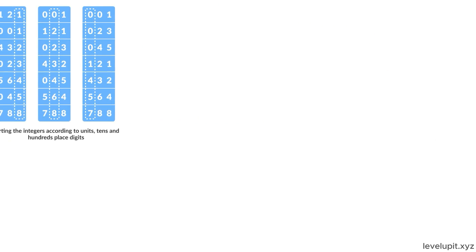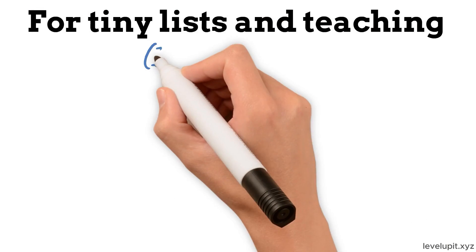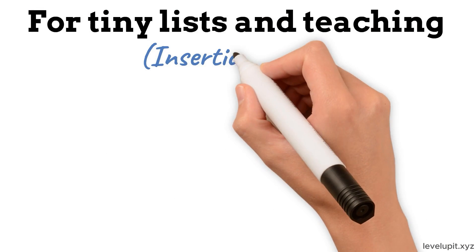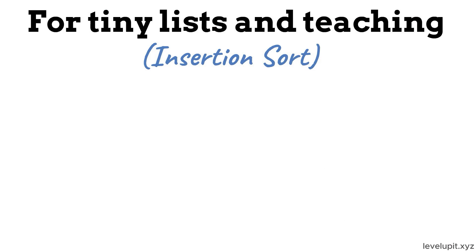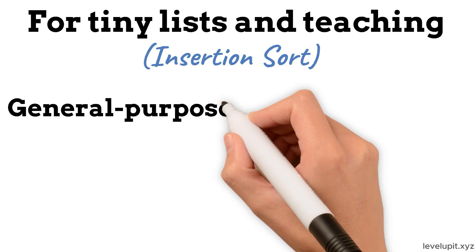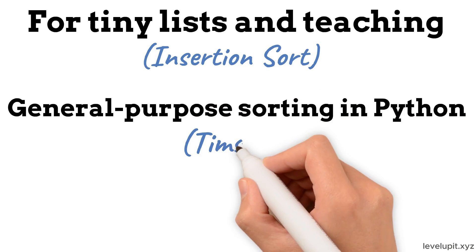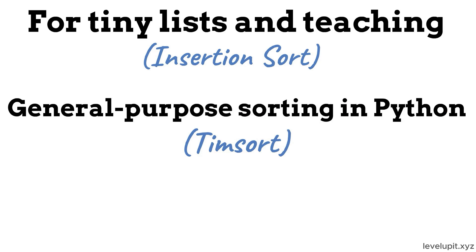Choosing the right method depends on the shape of the data and what you need. For tiny lists and teaching, the simple family is fine, with insertion sort the most practically useful. For big, general-purpose sorting in Python, the built-in TimSort is almost always the right answer, especially with a clear key.